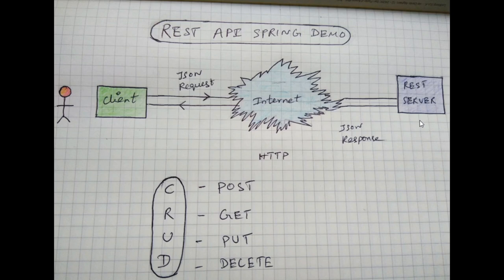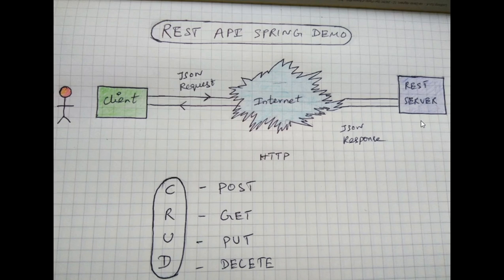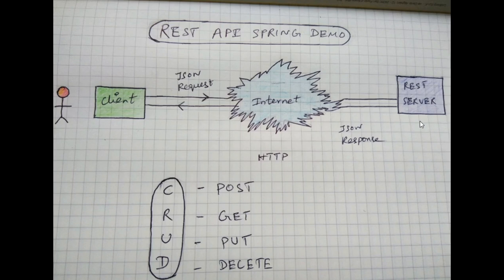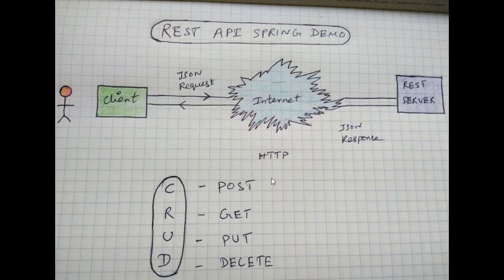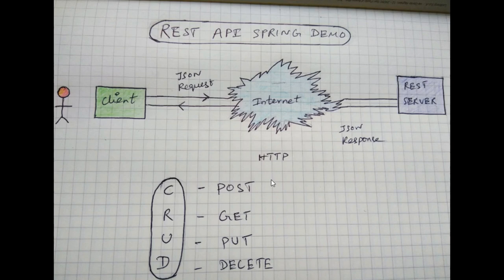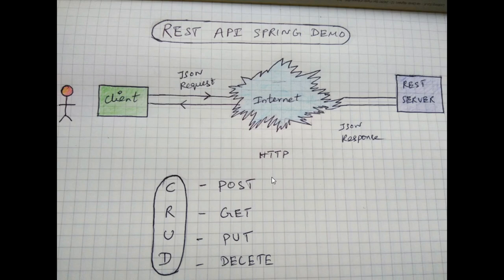How do you reach a client? Normally, you go to the JSON request body and reach the client. Basically, we create an employee, retrieve an employee, update an employee, or delete an employee. Suppose you use 4 HTTP verbs; each request is completely isolated.